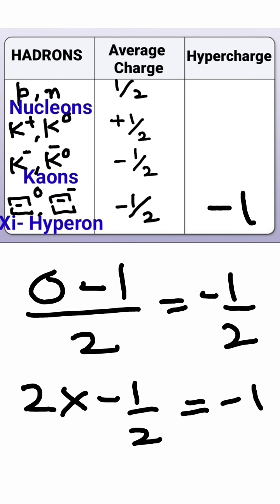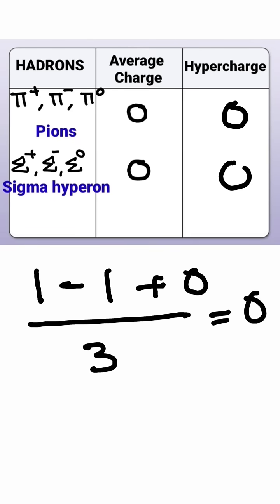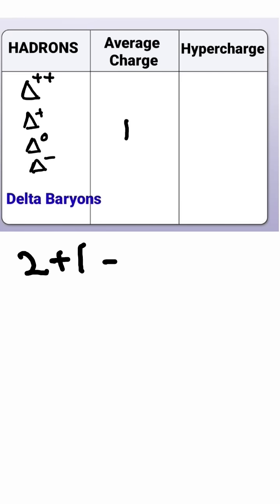For triplet families like pions and sigma hyperon, average charge is going to be zero, so hypercharge is zero for each of them. For delta hyperbaryons, average charge will be two plus one plus zero minus one by four, which is one by two.